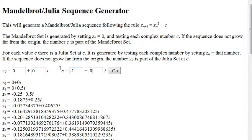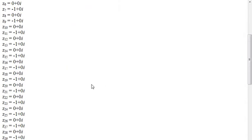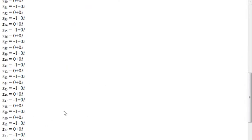Let's try negative 1 plus 0i, so the real number negative 1. Notice that this one alternates between 0 and negative 1.